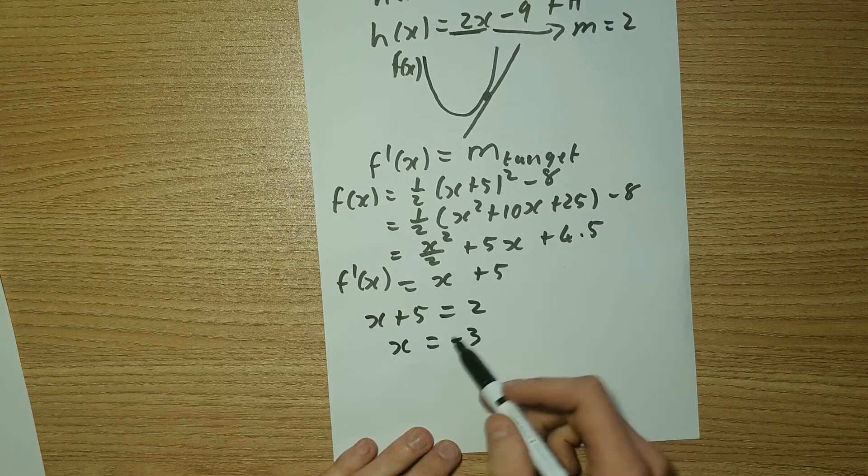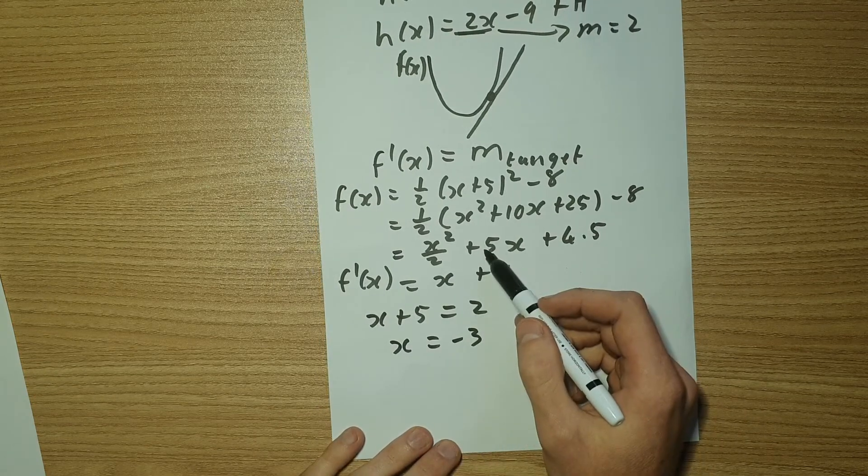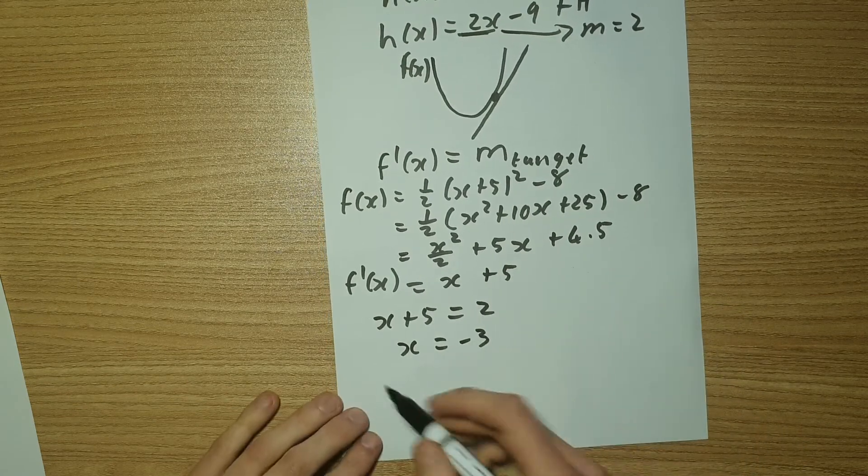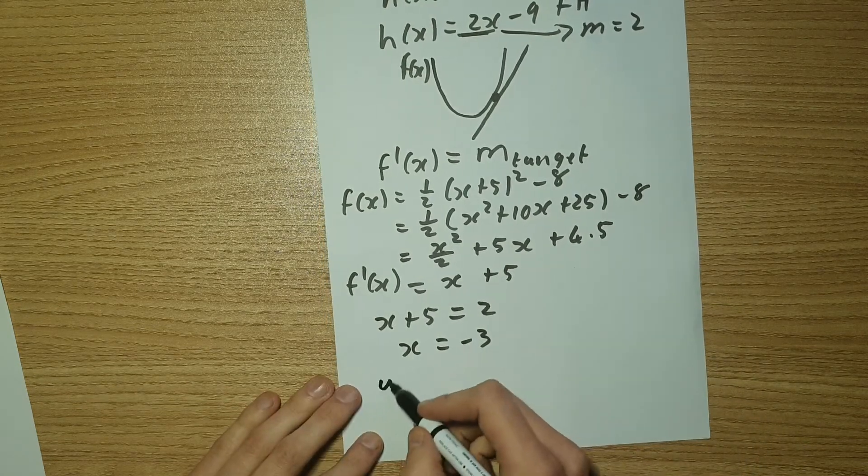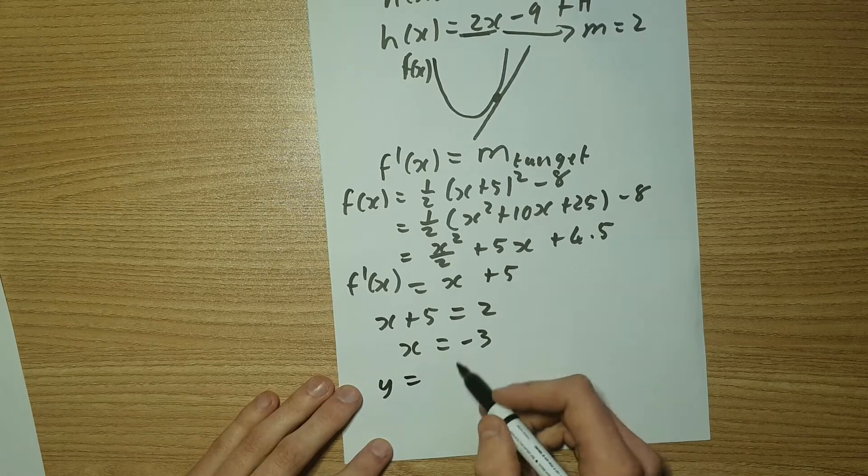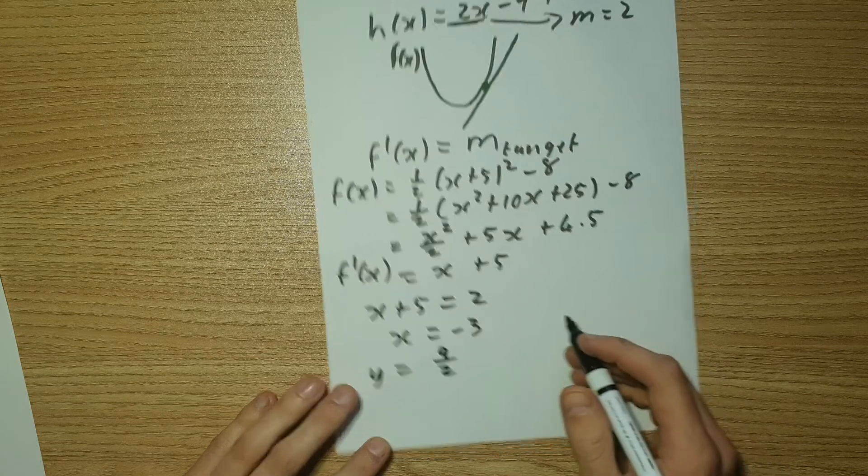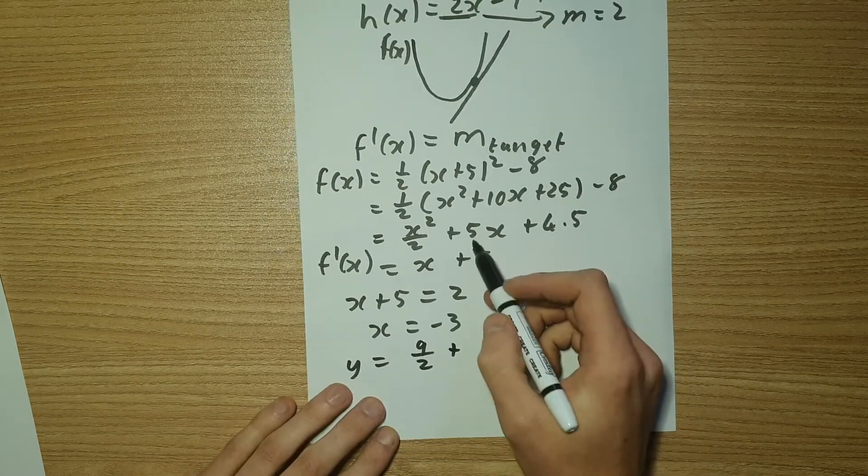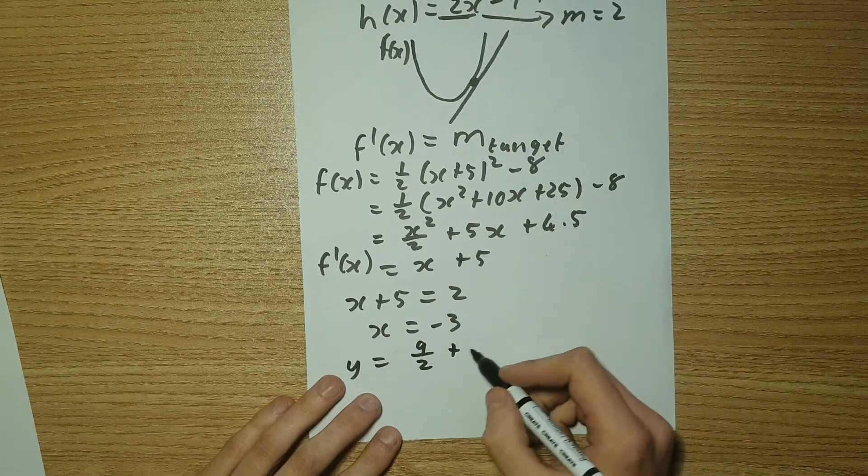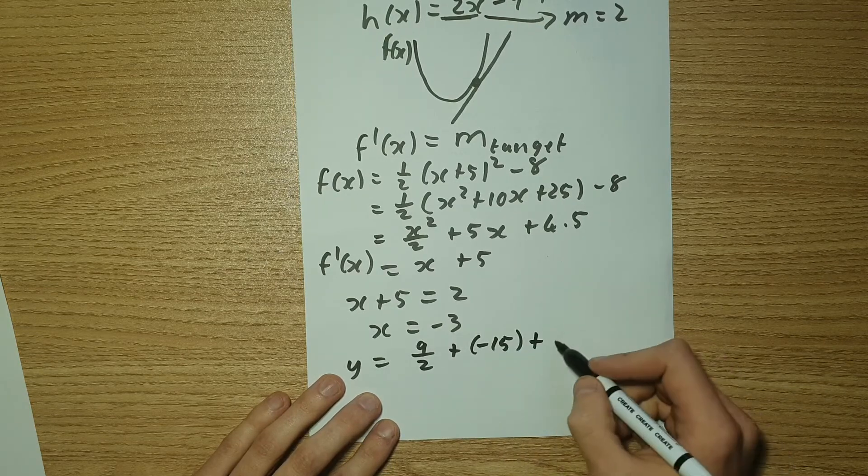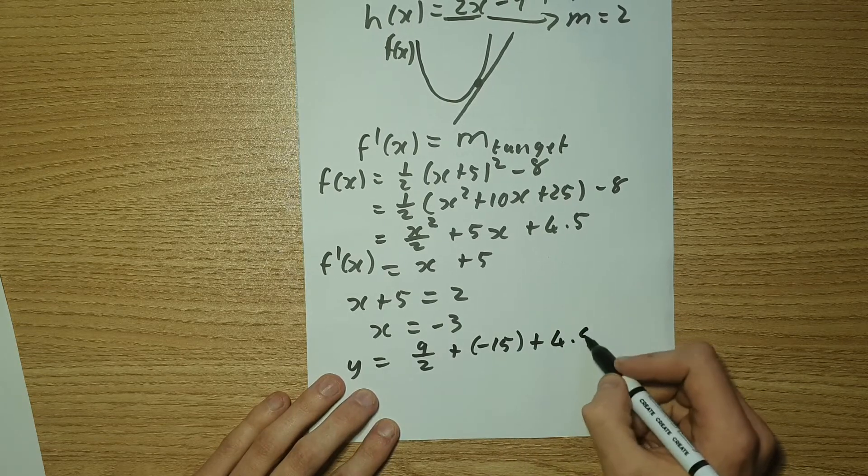Now I can use this, substitute it back into my original formula up top here. And I can get my Y value. So let's use Y equals two, negative three squared is nine over two, plus five times negative three is going to be negative 15 plus 4.5.